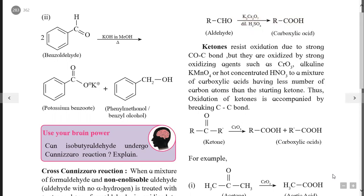The general equation for ketone oxidation is: RC=OR' when treated with CrO3 (chromic anhydride) gives RCOOH plus R'COOH, that is two carboxylic acid products.